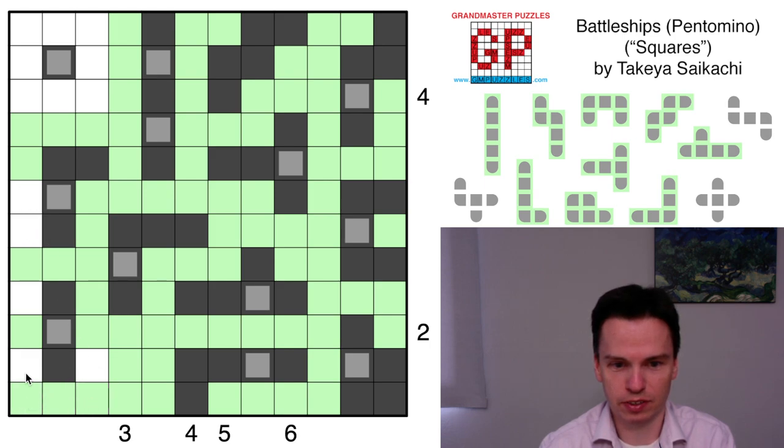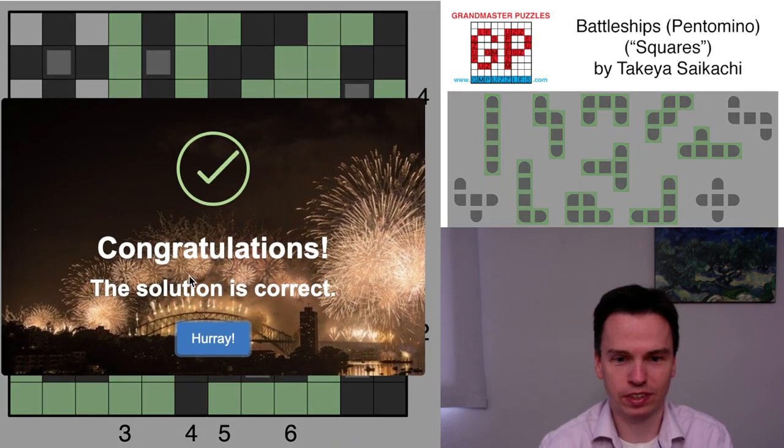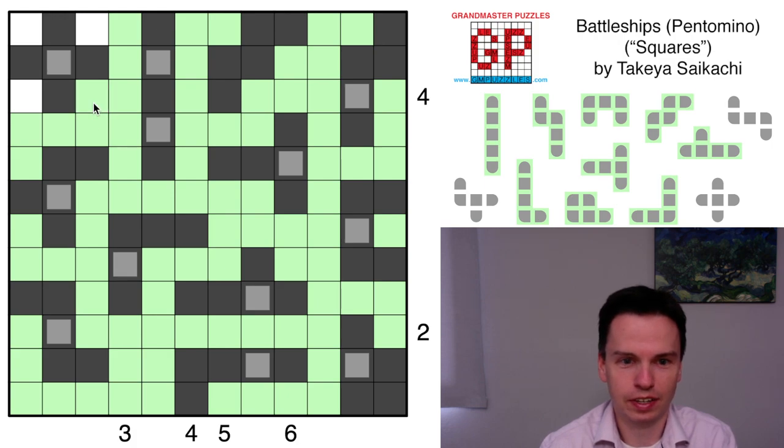We're not coming down here to make this into an N shape, so we have to take this. This isn't a T, this is a Z, so this is an F, and our friend the X is the last pentomino to place. We're through the grid. Thanks to Takeya for this great puzzle.